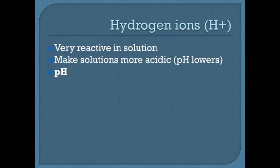Acidosis can occur and cause a lot of health complications. Hydrogen ions make solutions more acidic. When there are more hydrogen ions in a solution, the pH will lower. pH actually stands for power of hydrogen, so when we're measuring pH, we're actually measuring the amount of hydrogen in solution.